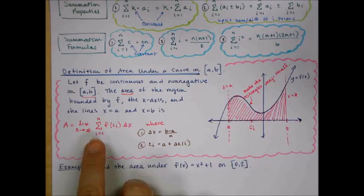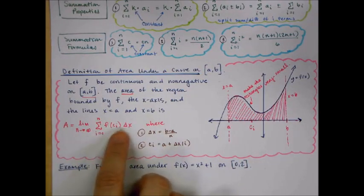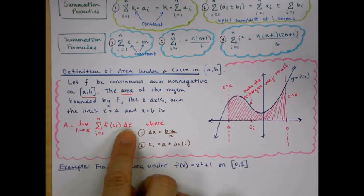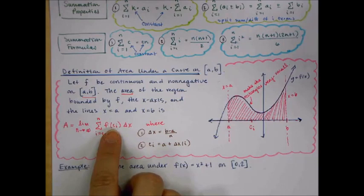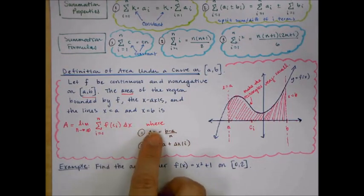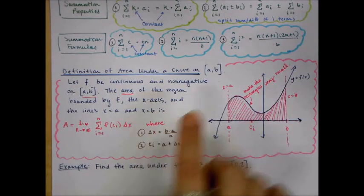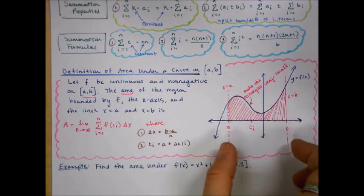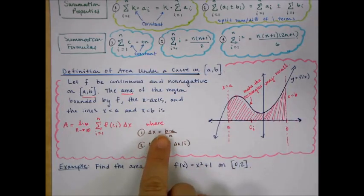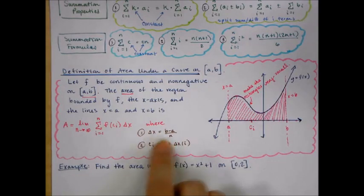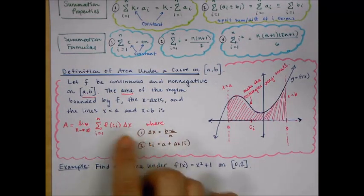The summation notation represents the sum. The area of each rectangle is width times height. Delta x is the width of each rectangle, and f of c sub i is the height. Delta x is given by b minus a over n — you take the width of your interval, b minus a, and divide by the number of rectangles to get the width of each rectangle.